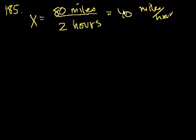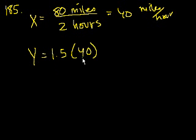And car Y traveled at an average speed that was 50% faster than the average speed of car X. So Y went 50% faster than 40 miles per hour. That's 40 plus 20, which equals 60 miles per hour.